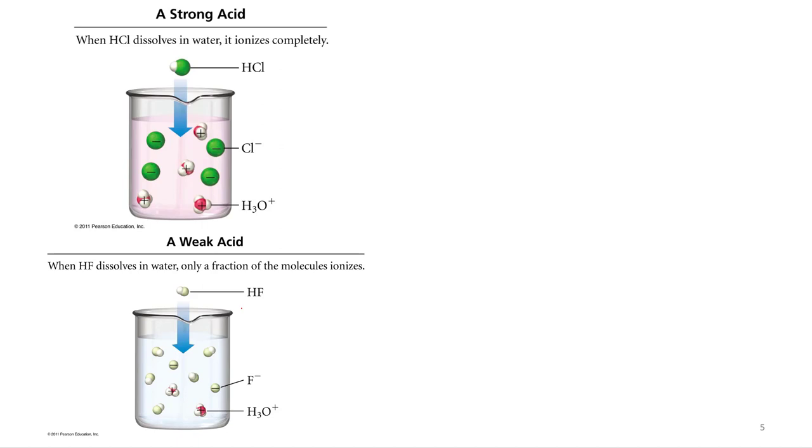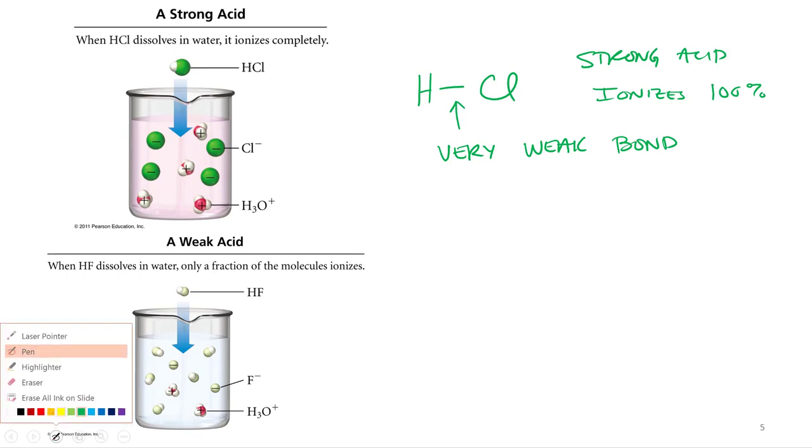So HCl is a strong acid. And so it ionizes 100%. We knew that. So that means it is a very weak bond. So when we write it, you can do it either way. Let's just do it Arrhenius just to save some time. 100%, one arrow, boom.